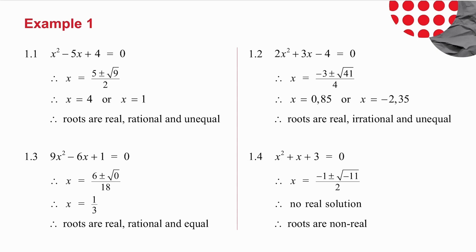Starting from the end: in 1.4, I got the square root of minus 11 — I can't take the square root of a negative in the real number system, so the roots are non-real. In 1.3, I got the square root of 0, which told me the roots would be equal. In 1.2, I got the square root of 41 and needed a calculator, which told me the roots were irrational. In 1.1, I got the square root of 9, which I could work out without a calculator, telling me the roots were rational. In each case, what was under the square root sign tells me the kind and number of answers I'm getting.